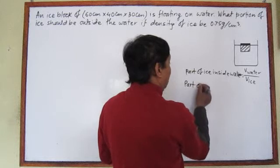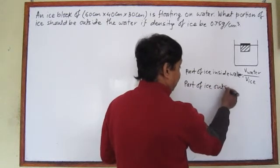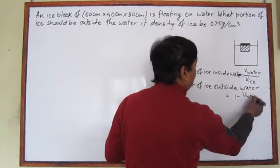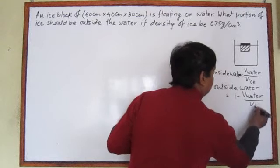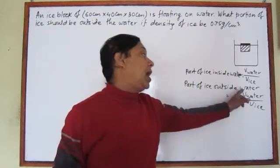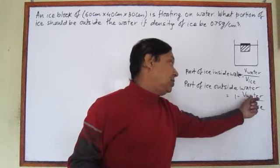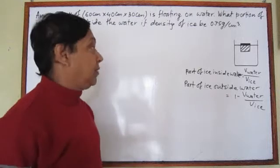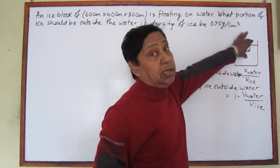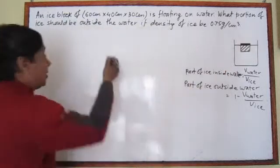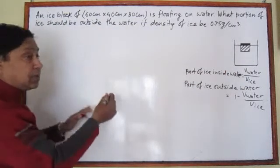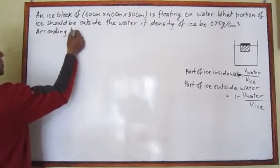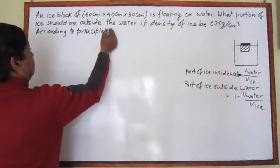If the part of ice inside water is known, then the part of ice outside water equals 1 minus ρ_water divided by ρ_ice. Our target is to find this value. To do so, I want to start from the principle of floatation, which states that for every floating body, the weight of the floating body equals the weight of the displaced liquid.